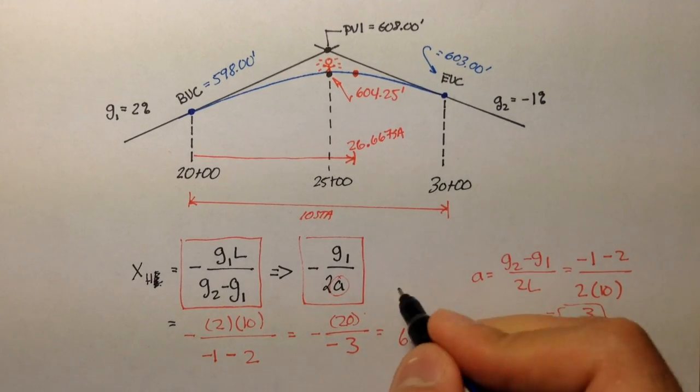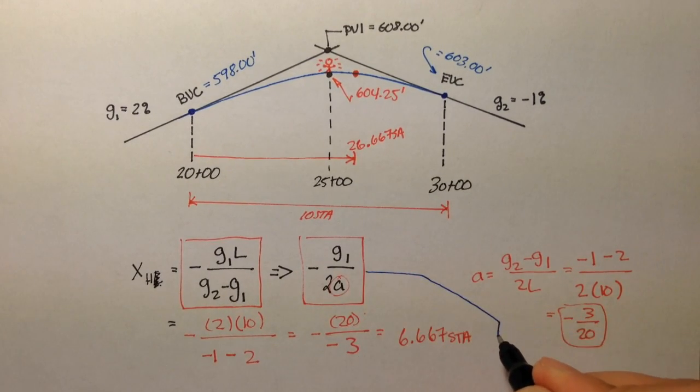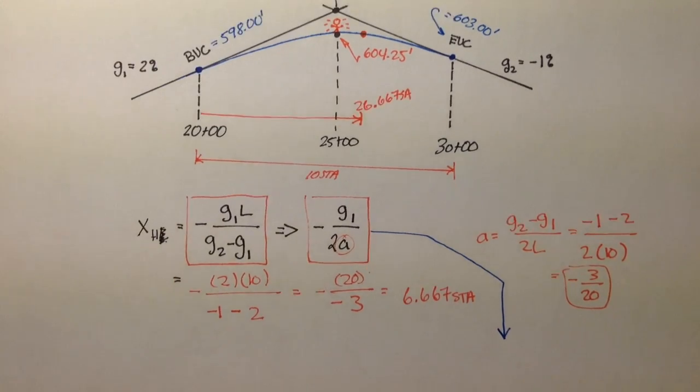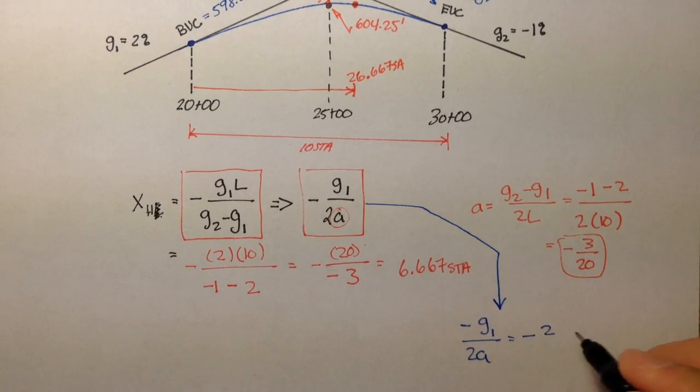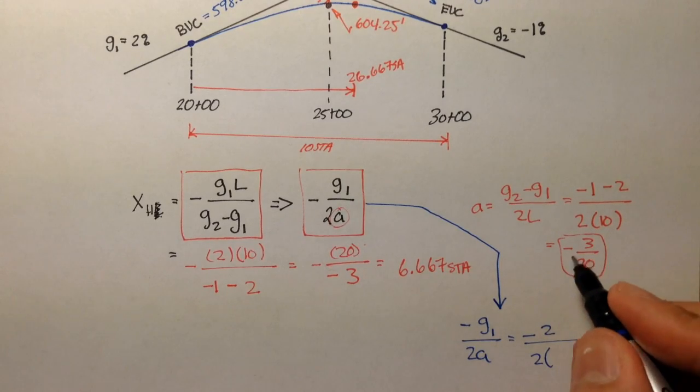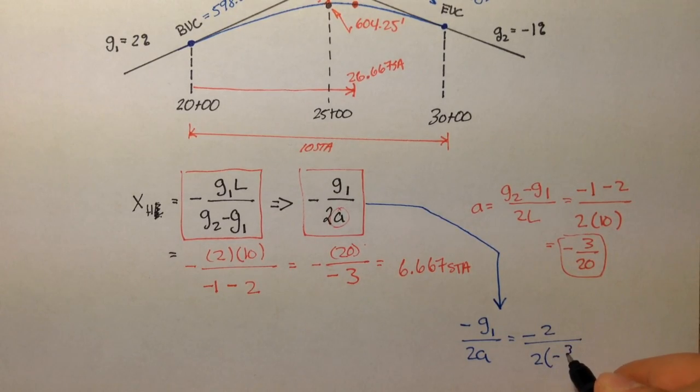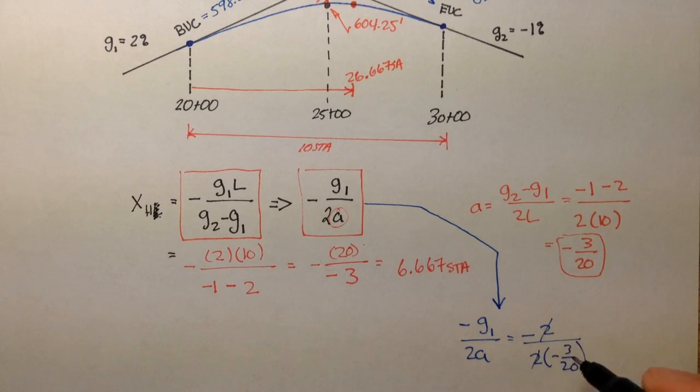So this is going to get a little bit messy, but negative g1 over 2a is going to be negative 2 over 2 times a, which is negative 3 over 20. Just making sure it's correct. And you'll see here that first of all, the 2s cancel out, and the negatives cancel out.